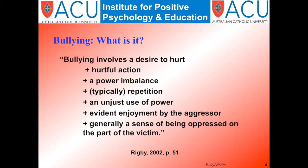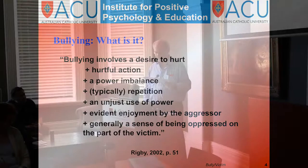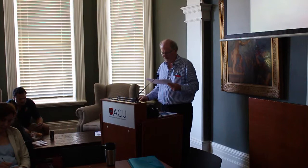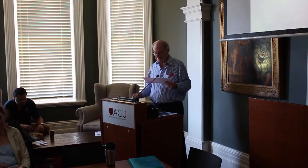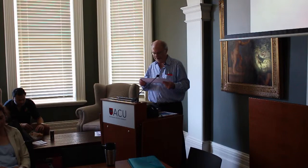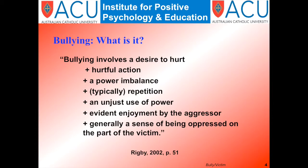Bullying is different from aggression in that whereas aggression is usually a single action, bullying is repetitive in nature. Bullies continue to bully victims for extended periods of time. Bullying also involves an imbalance of power. Bullies seek victims who are easy targets, including knowledge that the bullies will be able to overcome the victims, but it also means that they're choosing people who are typically vulnerable.